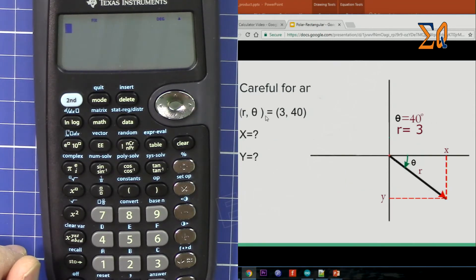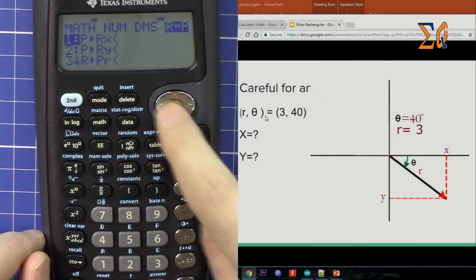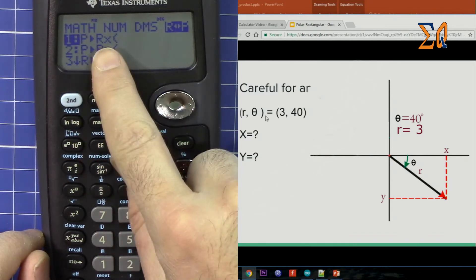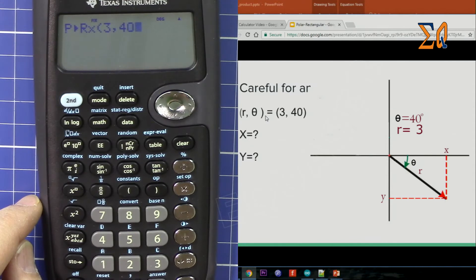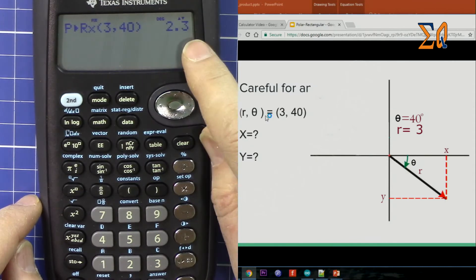Let's do another example. Here we have R and theta. Math, go to the left, so we want to get X. So we have 3, second function, comma, 40, close it. So this will give us the X, 2.3.